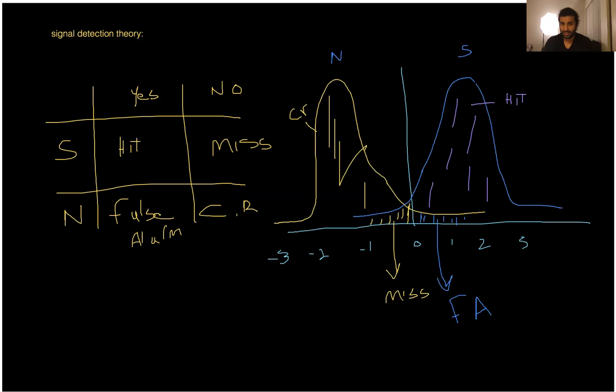Anything that is lower than our criterion, which lies underneath the signal distribution embedded in the noise distribution, it's going to be a miss — because it's lower than our criterion, we're not going to detect it. There's actually a signal and we say no, because it's lower than our criterion. And anything that is higher than our criterion but there is actually no signal — this is going to be a false alarm. We said yes because it's larger than our criterion, but there's actually no signal.